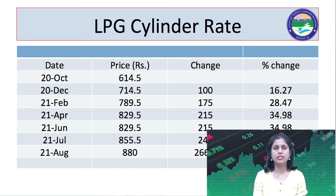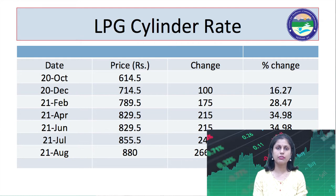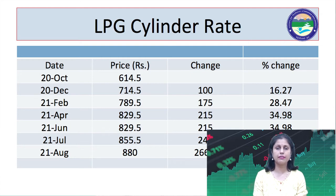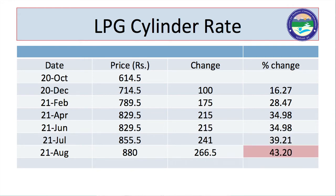Here is a table of LPG cylinder rates. In October 2020, the rate was Rs. 614.5. In December, prices increased to Rs. 714.5. In February 2021, it rose to Rs. 789.5; in April to Rs. 829; in July to Rs. 855; and in August 2021, the rate is Rs. 880. That is a 43.20% rise in the price of the gas cylinder. These prices are persistently and continuously rising — that is what causes inflation.